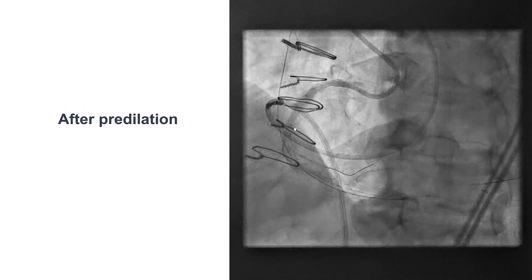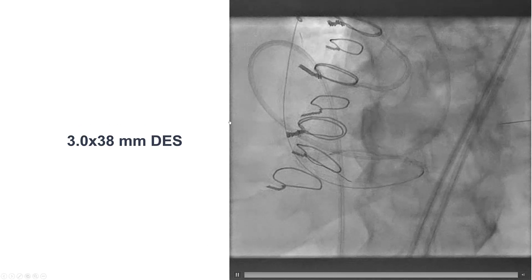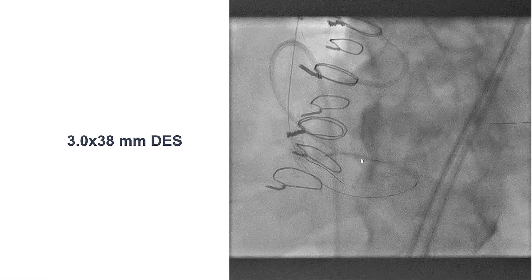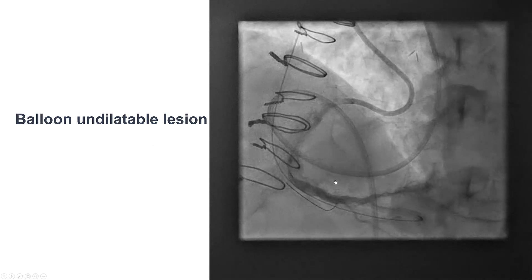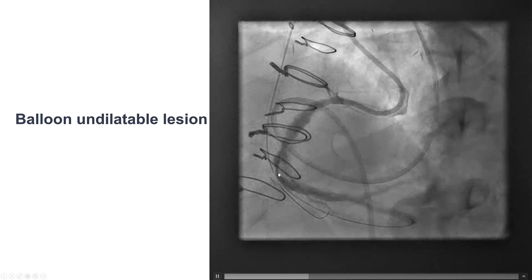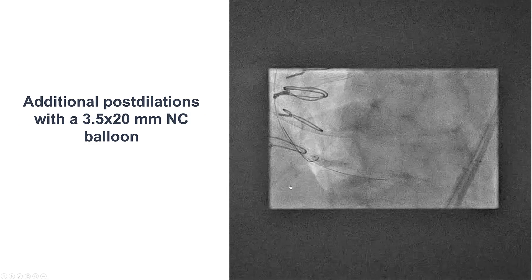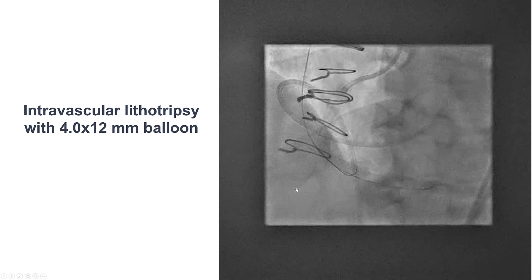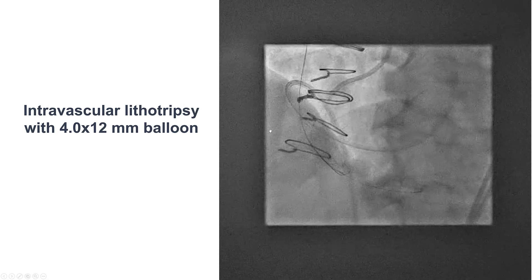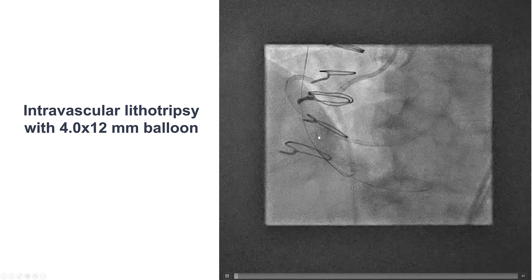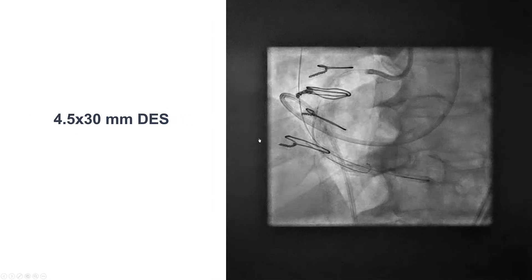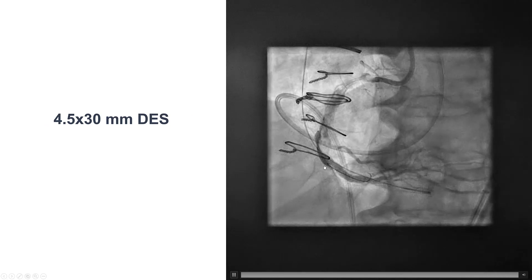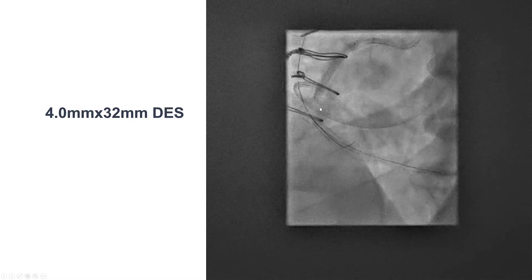We predilated the entire right coronary artery and the balloons seemed to expand, so we decided to stent. We placed DES stents from the PDA into the distal right coronary artery, then another stent a little more proximal. However, there was difficulty expanding the mid-RCA despite multiple balloons, which is why we decided to use intravascular lithotripsy. A 4.0 mm coronary shockwave balloon was inflated in the area of heavy calcification. After that, the lesion expanded nicely with a 4.0 mm balloon.